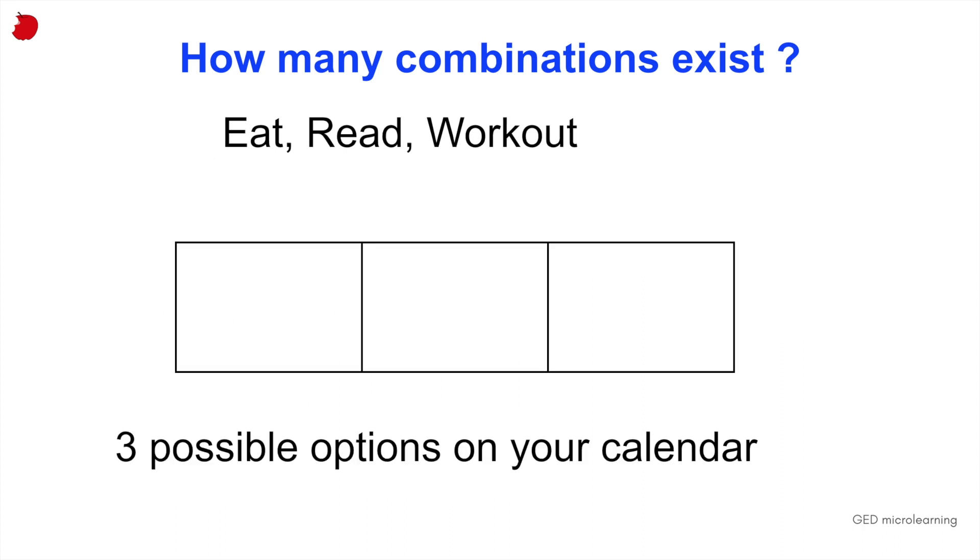And the way that I like to think about it, like mathematically, is this. So aside from doing it manually, you could do it mathematically, which is what I'm about to show you. You could think about these three events that you have to do, and how you want to place them in your calendar. So let's say you have these three boxes, which represent three slots in your day. And right now, you have three possible options on your calendar.